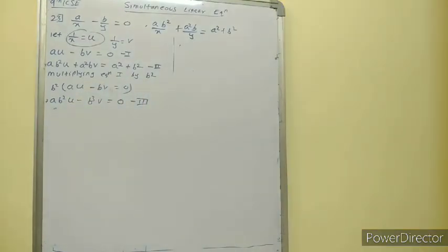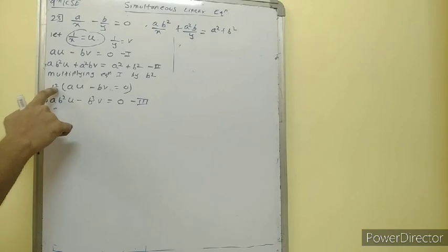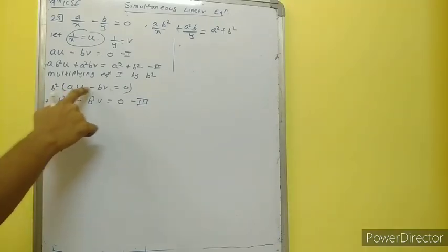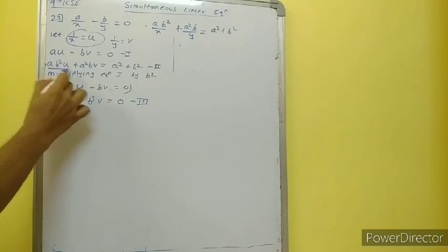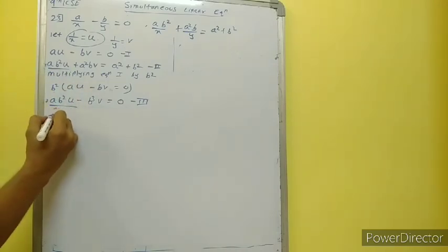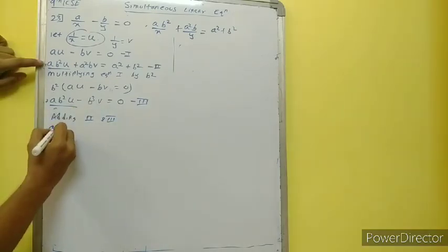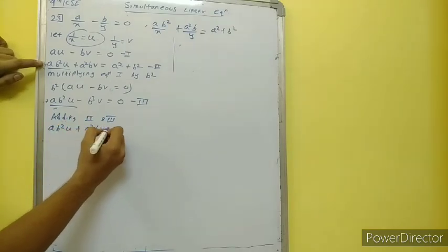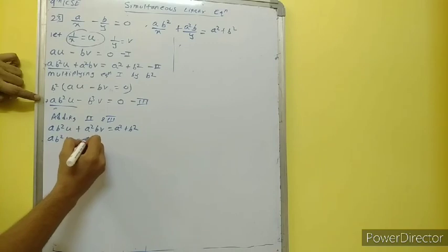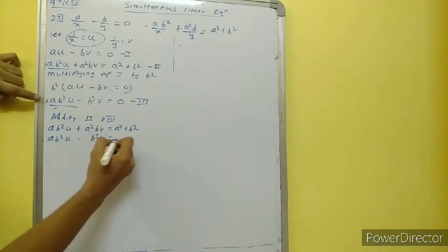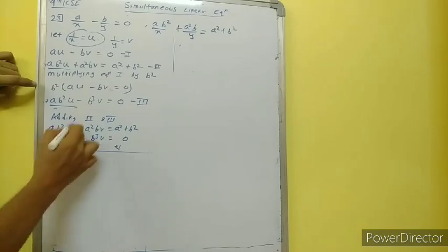Multiplying equation 1 by b²: b² multiplied by (a·u minus b·v) is equal to 0, giving a·b²·u minus b³·v is equal to 0 — this is equation 3. For equations 2 and 3, we have a·b²·u in both. So adding equations 2 and 3: the a·b²·u cancels; a²b·v plus b³·v is equal to a² plus b². Taking b·v common: b·v times (a² plus b²) is equal to a² plus b².